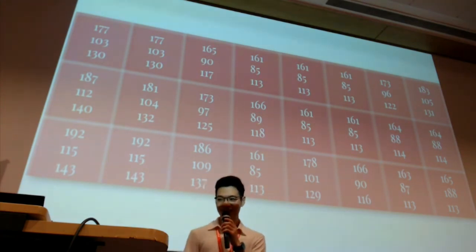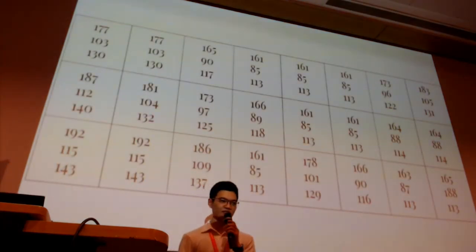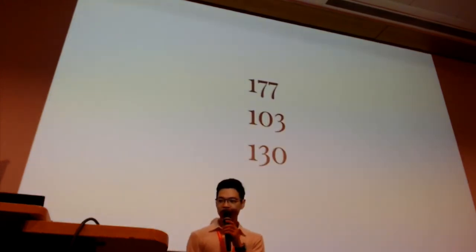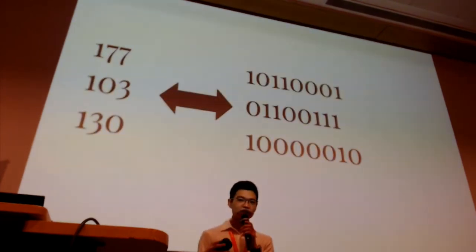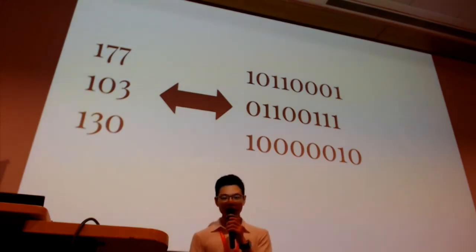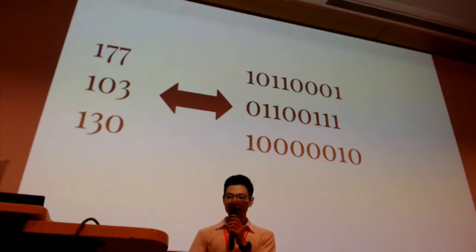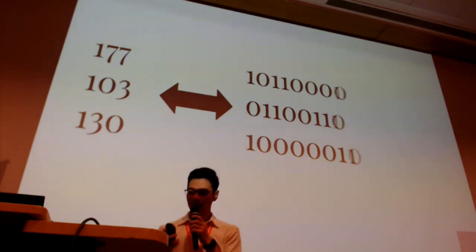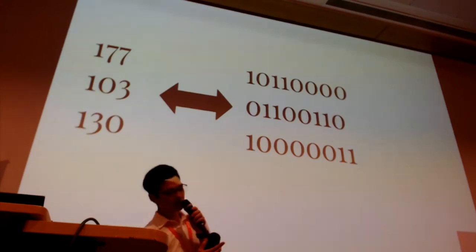Now let's get rid of all the messy color and have this nice little grid. Let's take a look at one specific RGB triplet — 177, 103, and 130. Now let's look at their binary equivalents. Let's ponder: what happens if you change the last bit of each binary number, also known as the least significant bit? Keep your eye on the bottom right of the screen, because that will reflect the color that the numbers on the left are currently representing. Let's flip the bits. This color represents 177, 103, and 130.